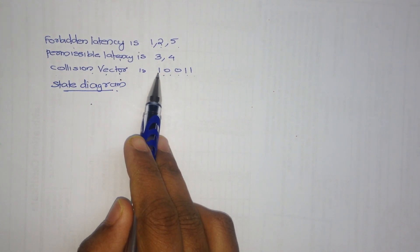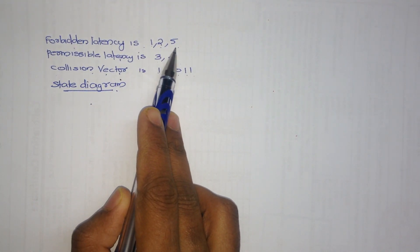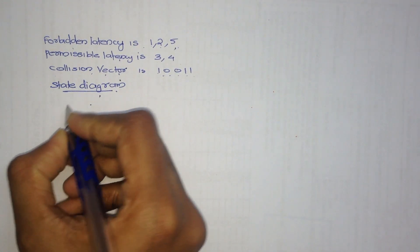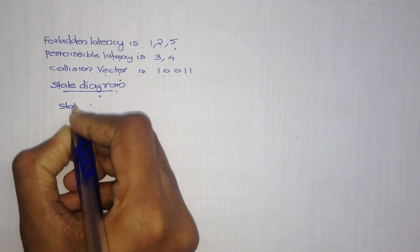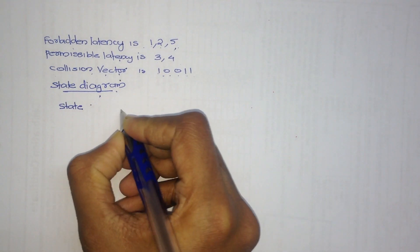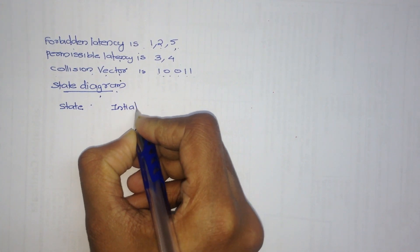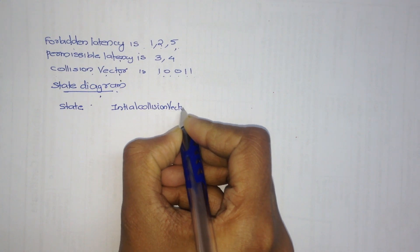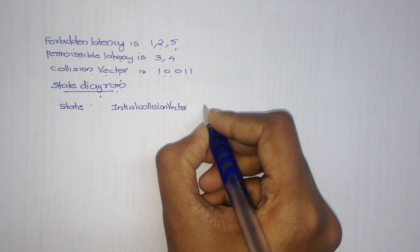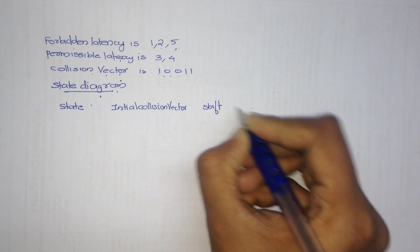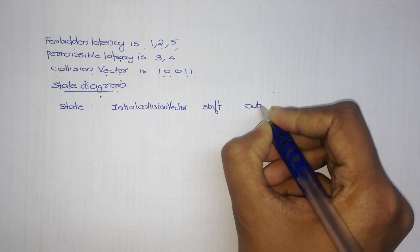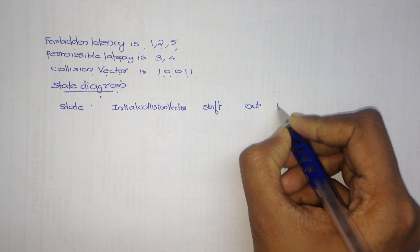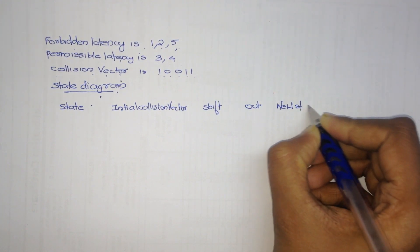We are placing 1 in all positions of the forbidden latency. Now we have to draw the state diagram. For drawing the state diagram, first we have to draw a table with columns: first state, initial collision vector, shift, out (which value we are omitting), and new state (whether new states are occurring or not).